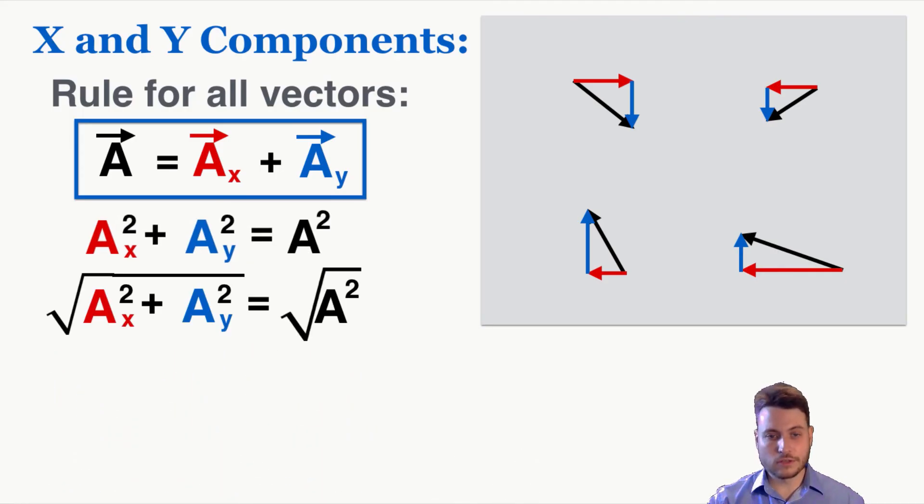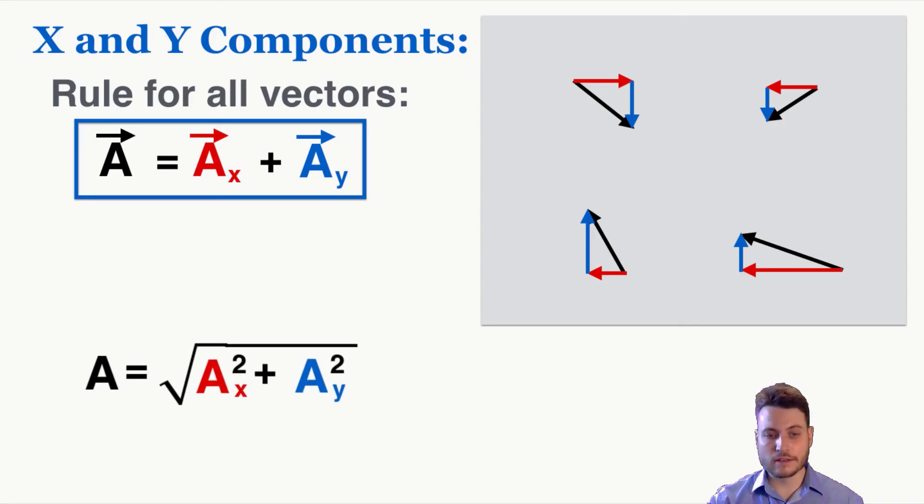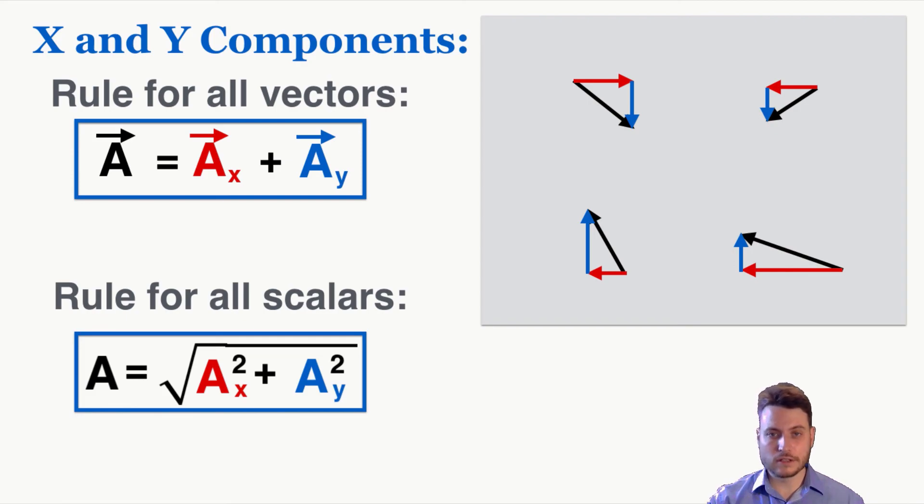And if I rearrange this into a general rule, the total vector is going to be equal to the square root of the squares of its own x and y component if I draw it as a scalar rather than a vector like this. So if we just focus on the scalar quantities, this will always be true for the x and y components of a vector.